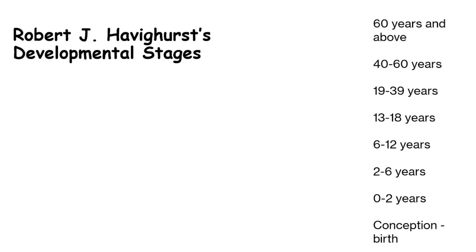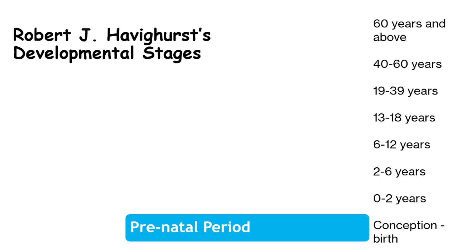First, let's review the stages outlined by Robert J. Havighurst. Stage 1: Prenatal Period, Conception to Birth.